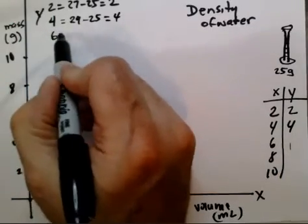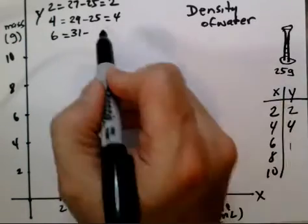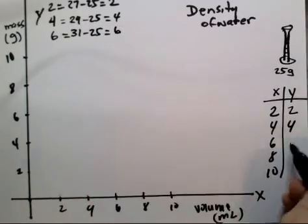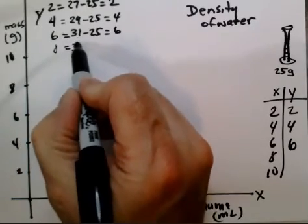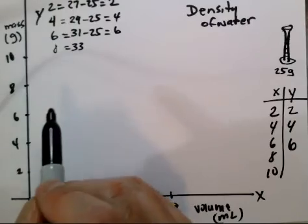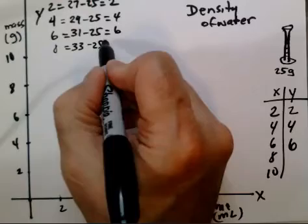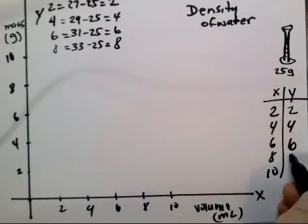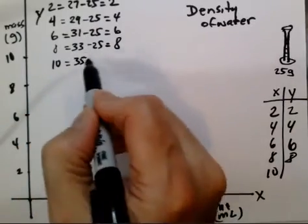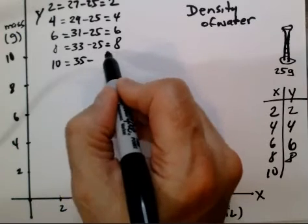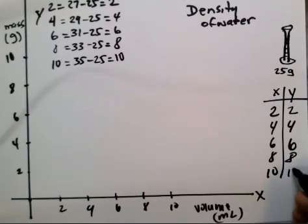When we had 6 milliliters, let's say that it was 31 grams. We would subtract 25 and we would get 6. When we had 8, we had 33 grams measured on the top loading scale. Subtract the weight, 25. That would give us 8. And then when we had 10 milliliters, it weighed 35. We subtract the weight of the graduated cylinder, 25. 35 minus 25 is 10. 10 grams.